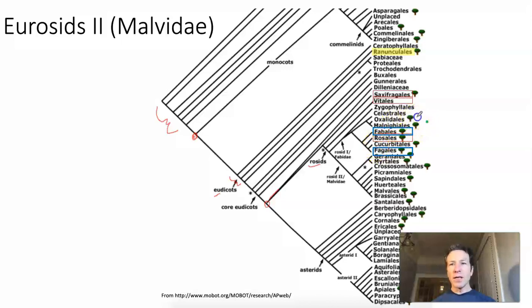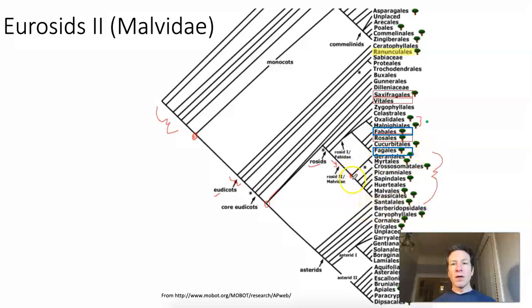We've already talked about the oxalidaceae and malpigiales in our last lecture. However, we haven't yet come down this branch, which goes to the rosids too. These are the plant orders and families we will cover today. When we complete this, that will finish our tour of the rosids, and our next stop will be the asterids.